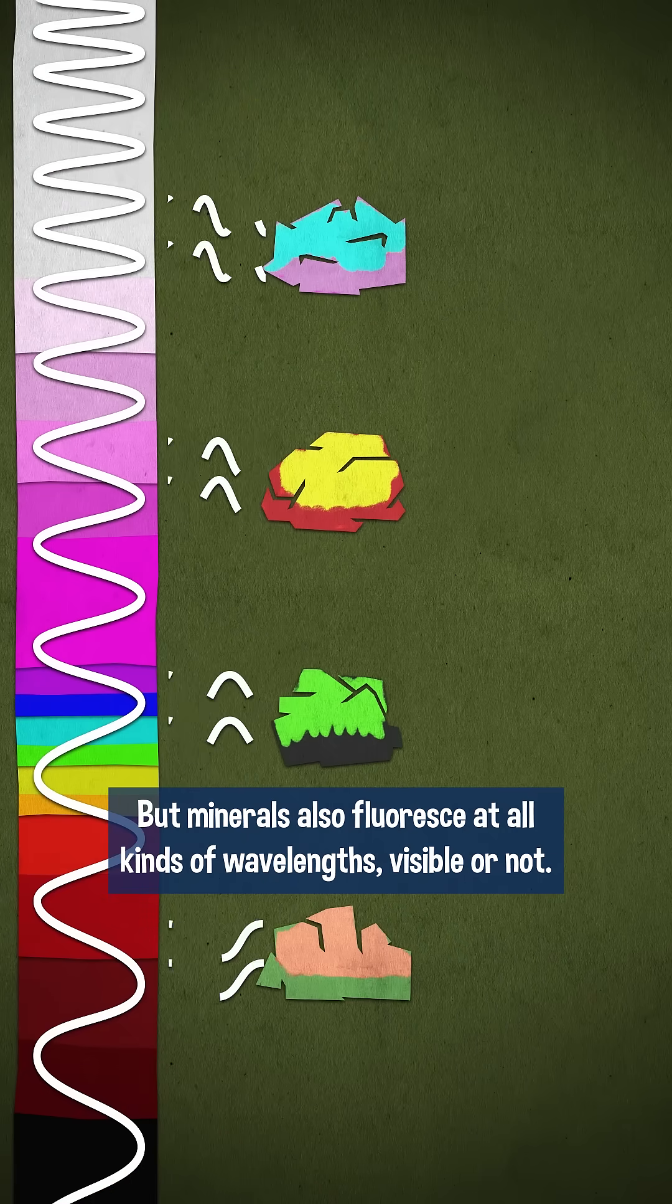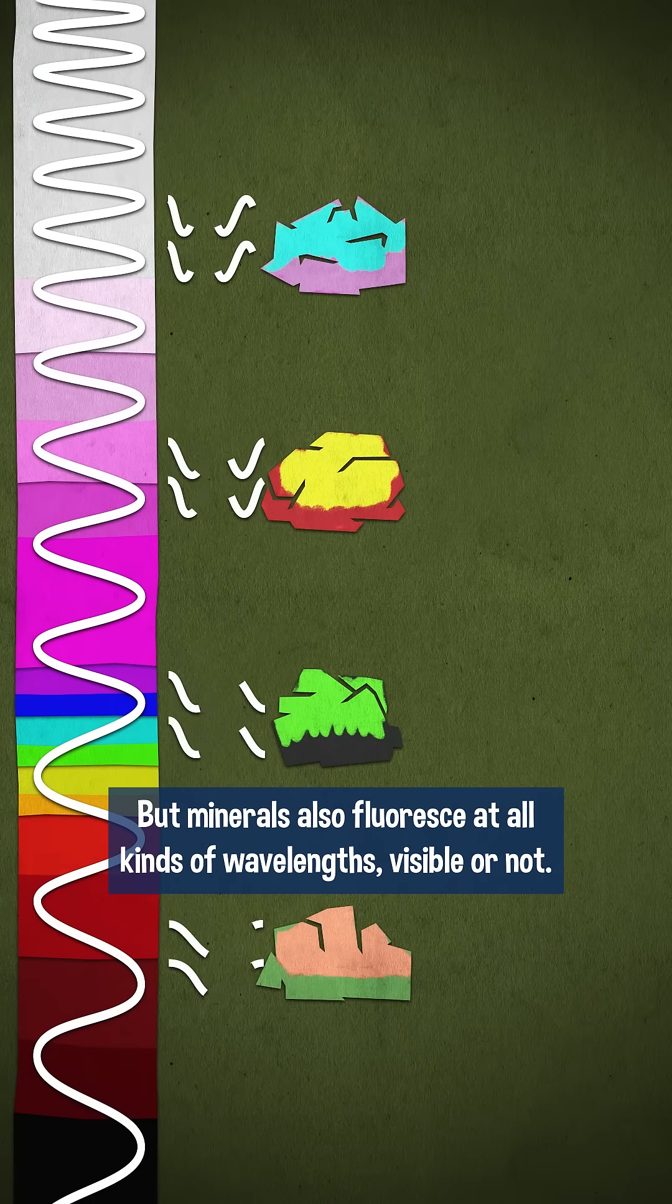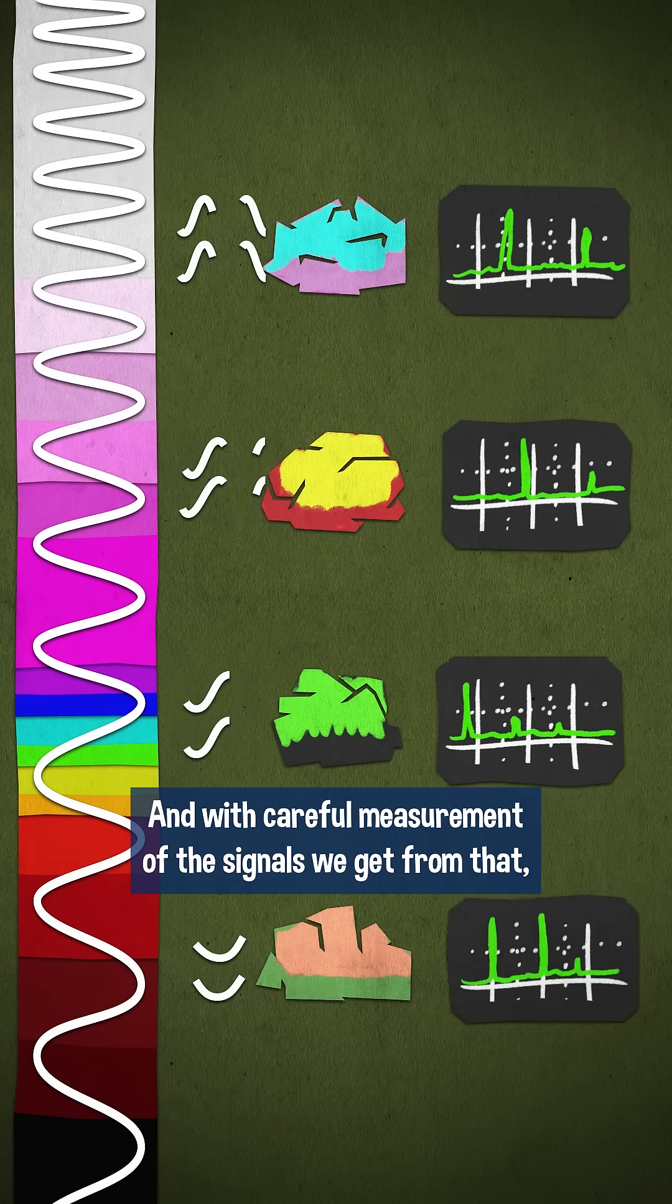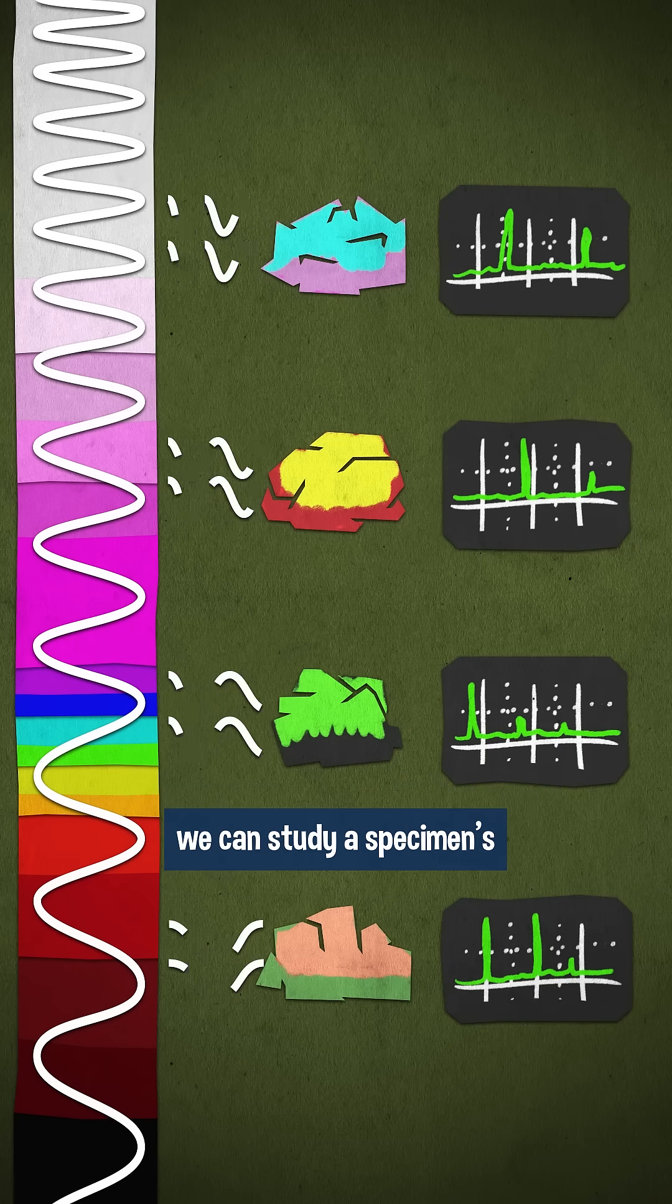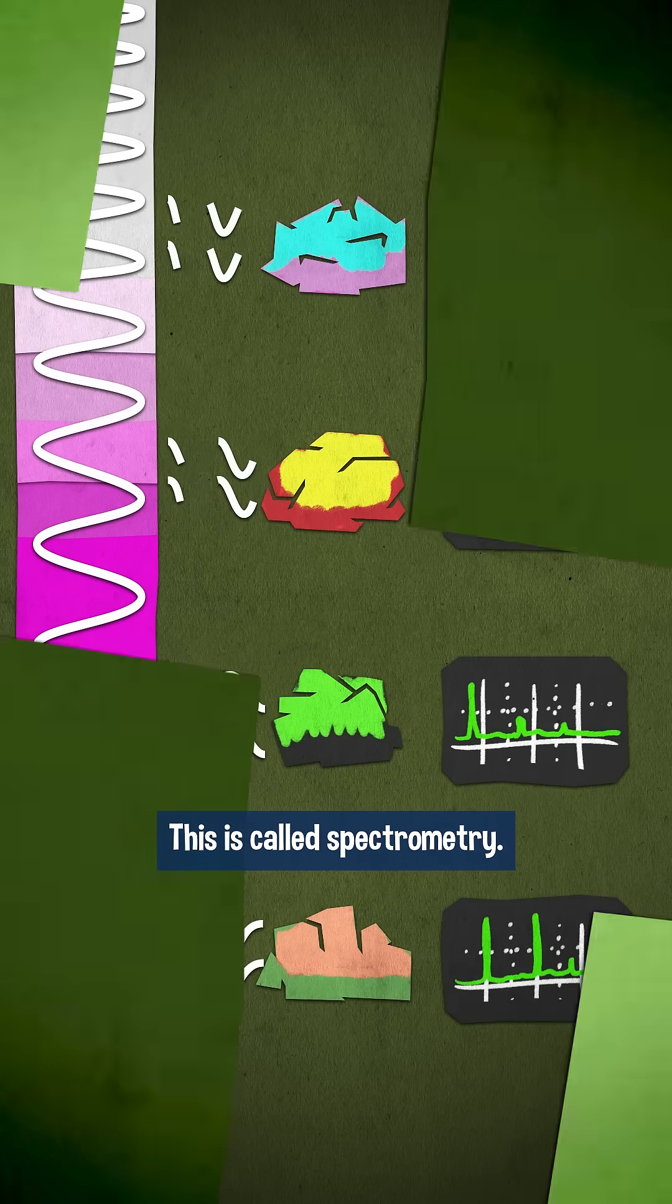But minerals also fluoresce at all kinds of wavelengths, visible or not. And with careful measurement of the signals we get from that, we can study a specimen's chemistry with very high precision. This is called spectrometry.